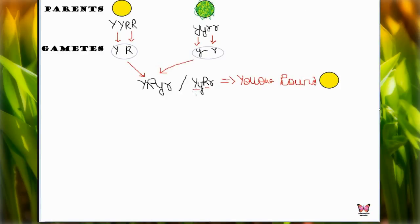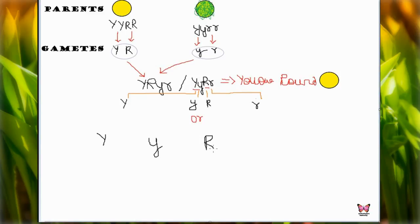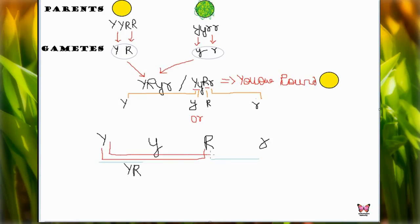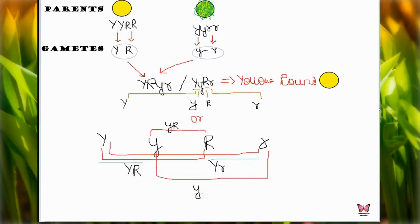From the F1 generation, we get gametes: capital Y, small y, capital R, and small r. If we rearrange them, by crossing first and third we get capital YR, first and fourth gives capital Y small r, second and third gives small y capital R, and second and fourth gives small y small r.